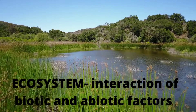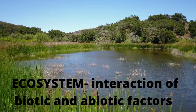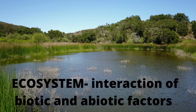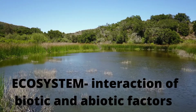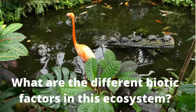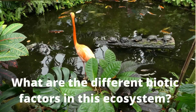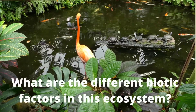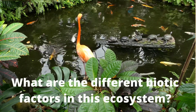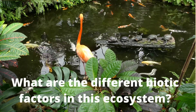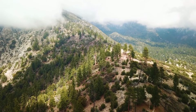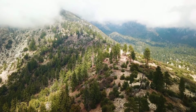We all know that the ecosystem is an interaction of biotic and abiotic factors. Let us understand about biotic and abiotic factors by looking at this picture. What are the different biotic factors in this ecosystem? That's right, they have different animals living in this ecosystem.